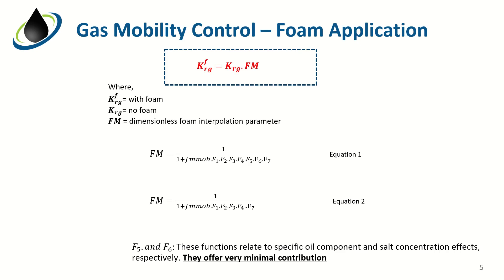KRG_F is the gas relative permeability with foam, KRG is the gas relative permeability with no foam, and FM is the dimensionless foam interpolation parameter. As can be seen in the equation, gas mobility control is modeled by using the FM parameter to reduce gas mobility. FM is always less than 1. FM is itself a function of F1, F2, F3, F5, F6, F7, and FMob parameters. FMob is the base foam mobility reduction factor which captures the impact of all other parameters.